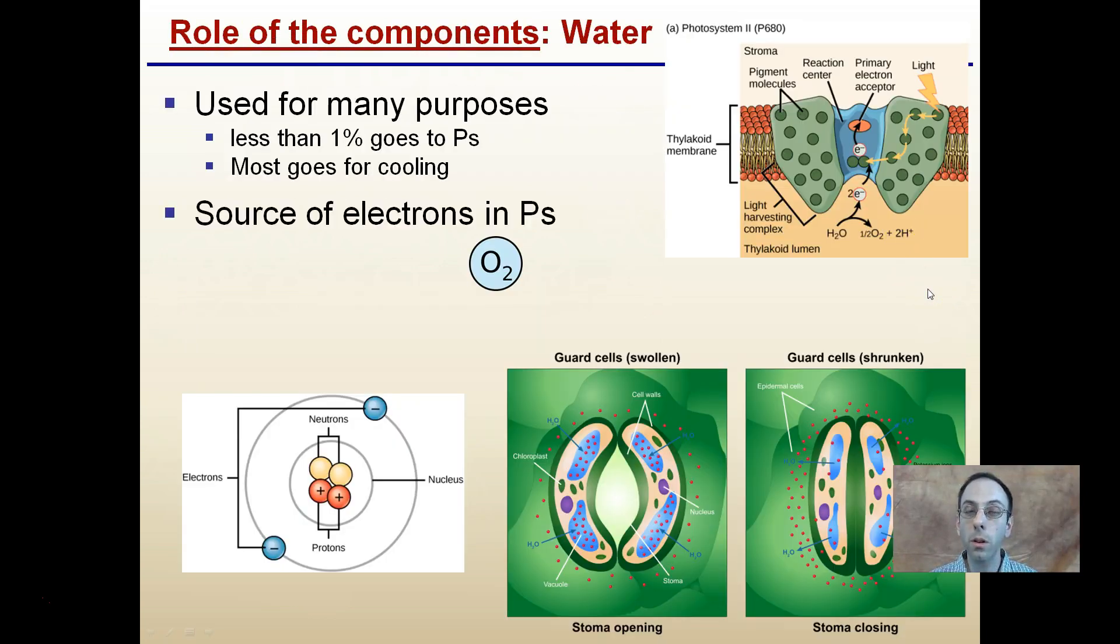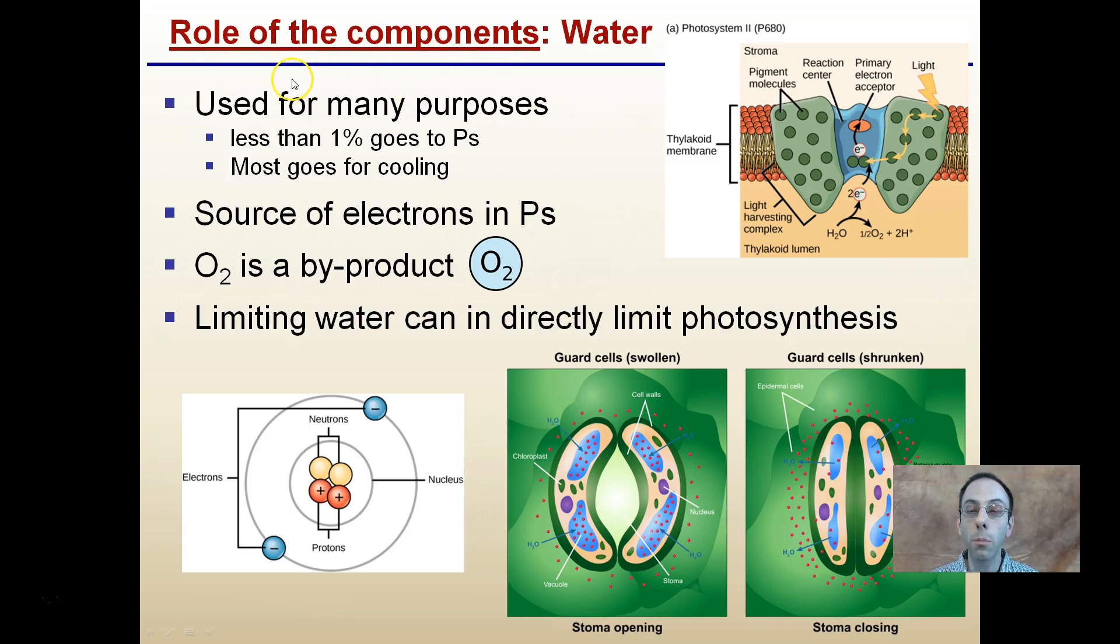Another very important component is water. It's used for many purposes in a plant. Less than 1% goes to the photosynthetic process. Most goes for cooling. Imagine that plants are receiving the light, they're generating a lot of heat with that. Through their transpiration process, they're able to cool themselves.